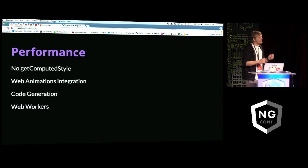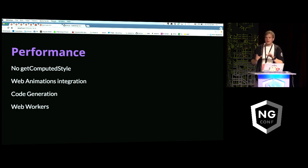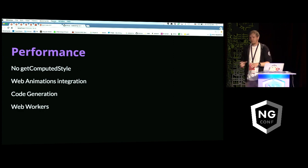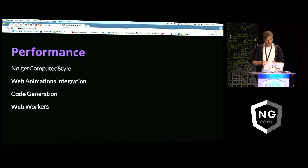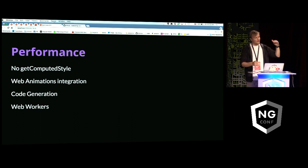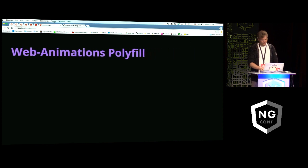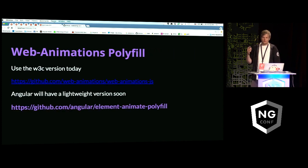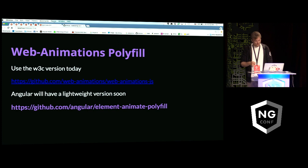This brings to mind performance. Why do we have such a different system that deviates so far from CSS? The biggest reason is we don't want to rely on the DOM or on getComputedStyle, because getComputedStyle causes browser jank. We really want to use web animations. Having the ability to code-gen — taking our complicated animation code and making simple render statements — also yields a lot of performance. This all works with web workers. The only dependency you need is the web animations polyfill. There's a W3C polyfill, and the Angular team is also putting together a lightweight polyfill with only the code Angular needs for web animations.